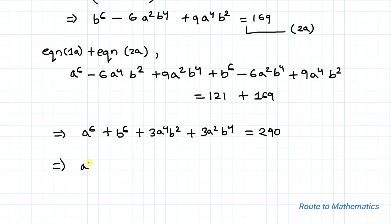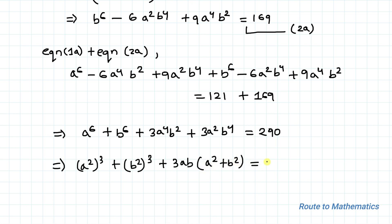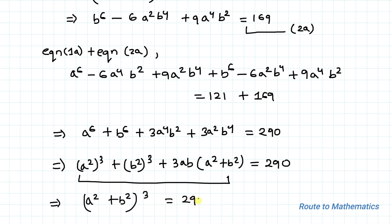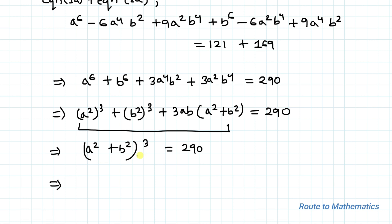We can rewrite this as (a²)³ + (b²)³ + 3a²b²(a² + b²) = 290. Applying the algebraic identity for (a + b)³, this becomes (a² + b²)³ = 290. Taking the cube root of both sides, a² + b² = ∛290. That is our answer. I hope you have understood the solution.